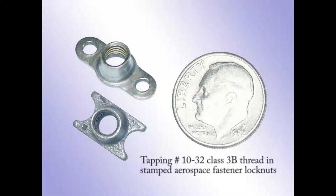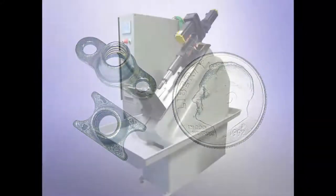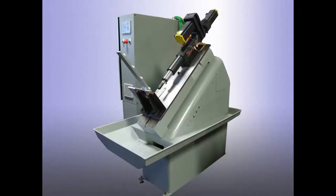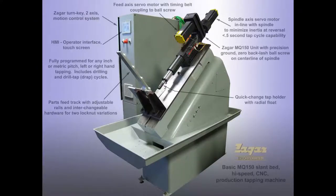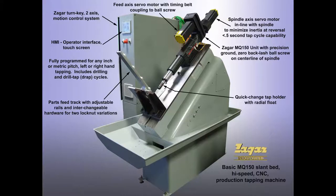The parts shown are stamped steel aerospace fastener lockouts. The ID threads are class 3B number 1032. The basic machine is an excellent bed standard that features an MQ150 unit with a spindle-axis servo motor mounted inline with a spindle to minimize inertia.